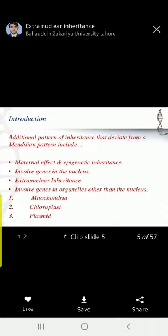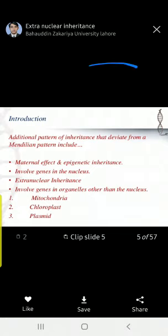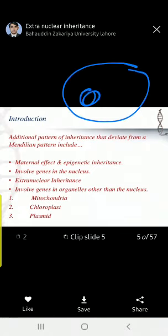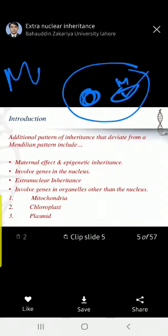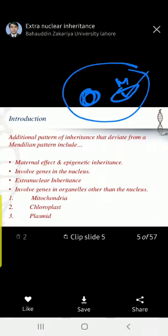To show this deviation from Mendel, consider: you have a cell, you have a nucleus, and inside the cell you have mitochondria — the mitochondria contain their own genetic material.